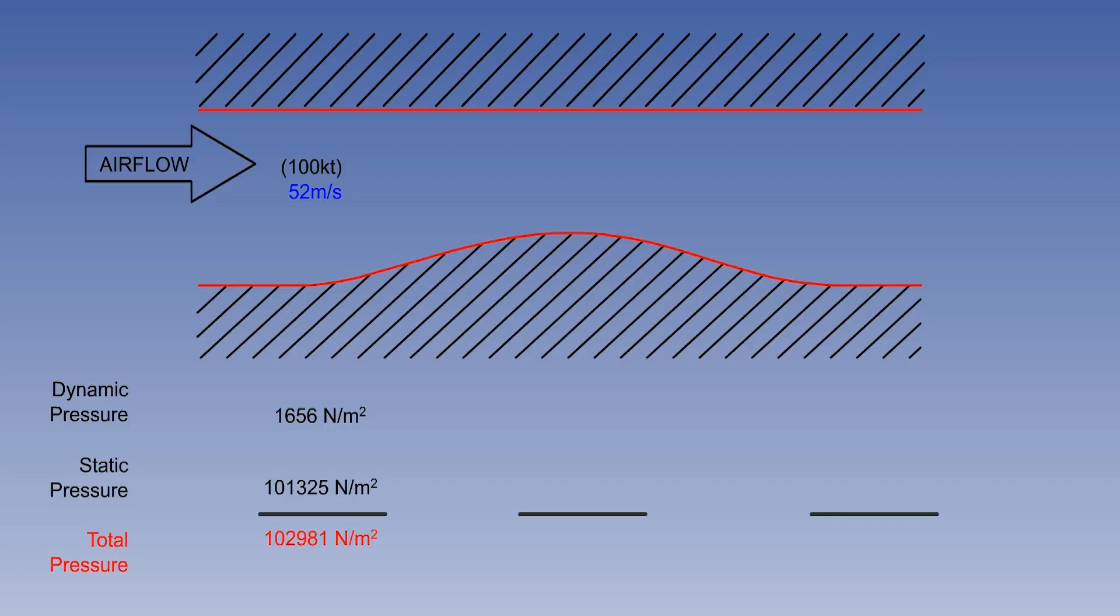Pressure energy, 101,325, plus kinetic energy, 1656, equals a constant, 102,981 newtons per square meter.